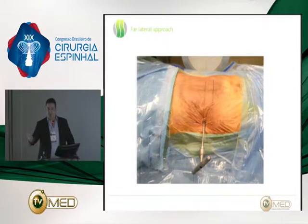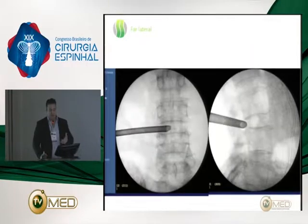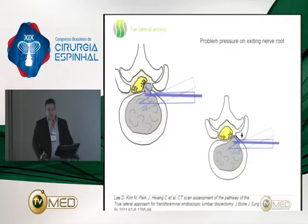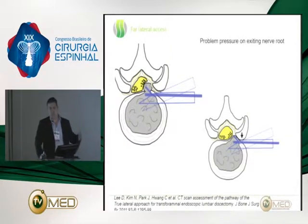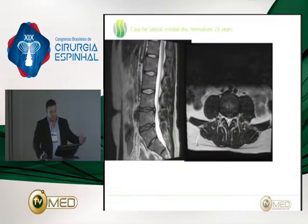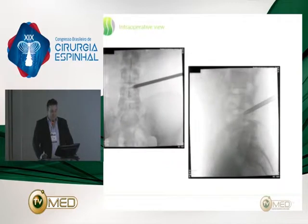The far lateral approach is an approach often used by Ruetten, who is one of the pioneers and a skilled endoscopic spine surgeon. He goes very far lateral, allowing entry into the spinal canal, but with a slightly higher risk of exiting nerve root damage. This occurs because Kambin's triangle is a three-dimensional triangle — when you go further lateral, you have less area to work with, as in the case of medial disc herniation where you need to enter the disc space and have enough space inside the spinal canal.